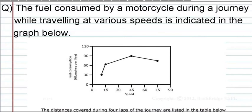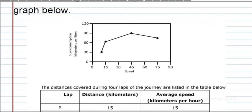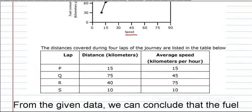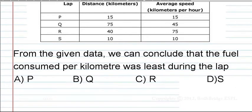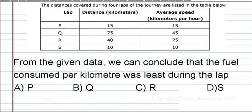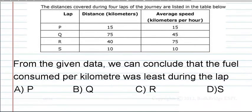The fuel consumed by a motorcycle during a journey while travelling at various speeds is indicated in the graph below. This graph shows fuel consumption on one axis and speed on the other. Fuel consumption is shown per kilometer, indicating how much distance was travelled at each speed across four laps. The question asks: during which lap did the motorcycle consume the least fuel per kilometer?